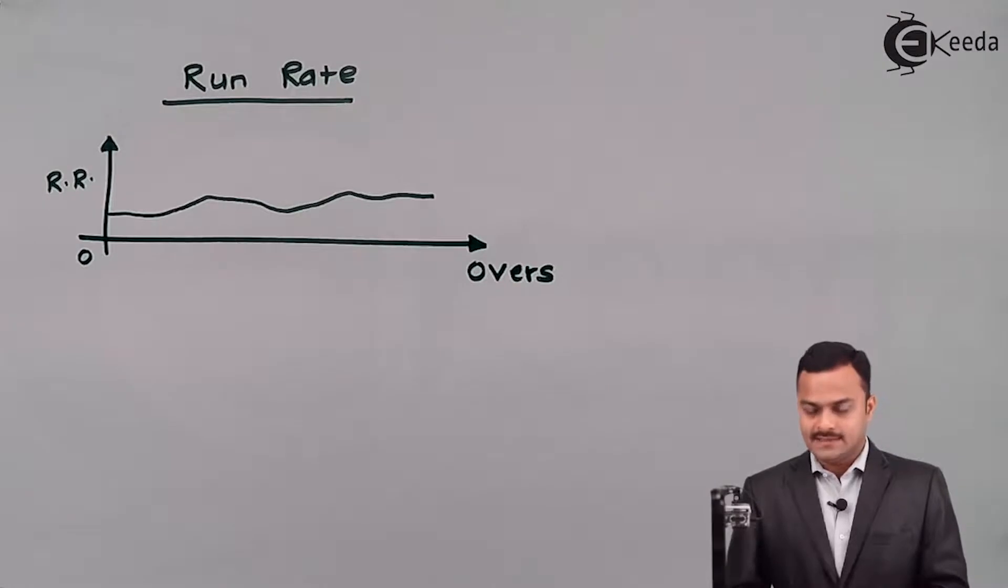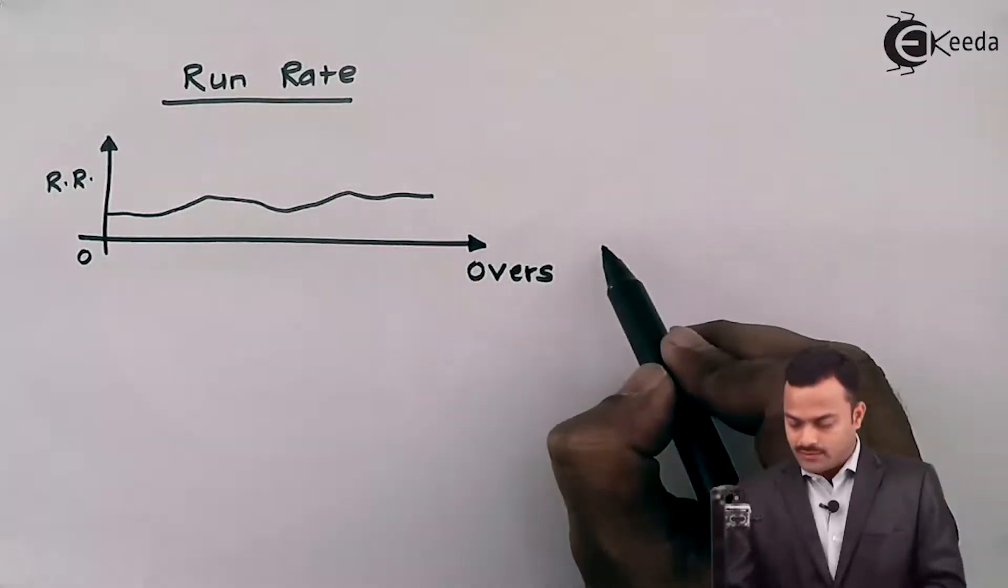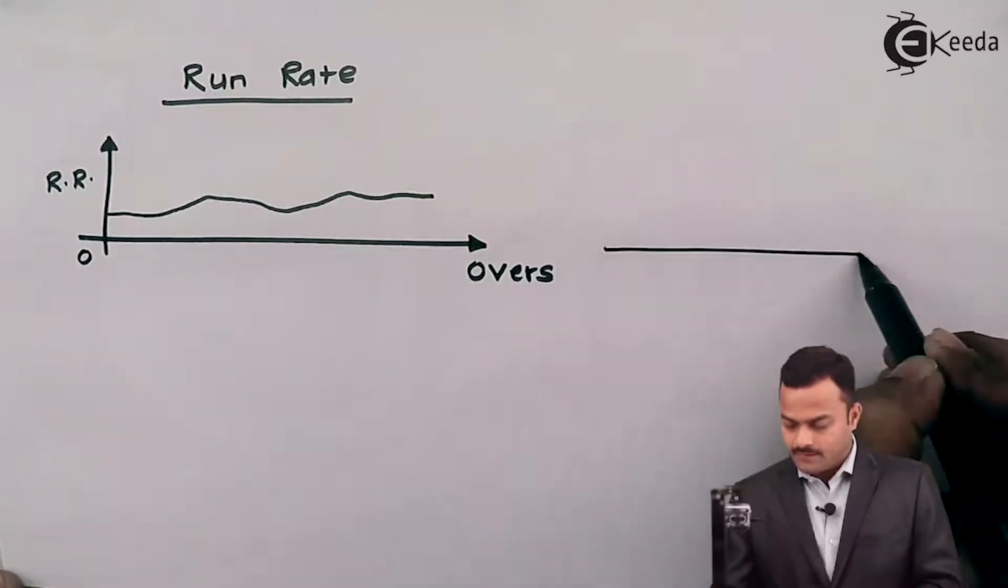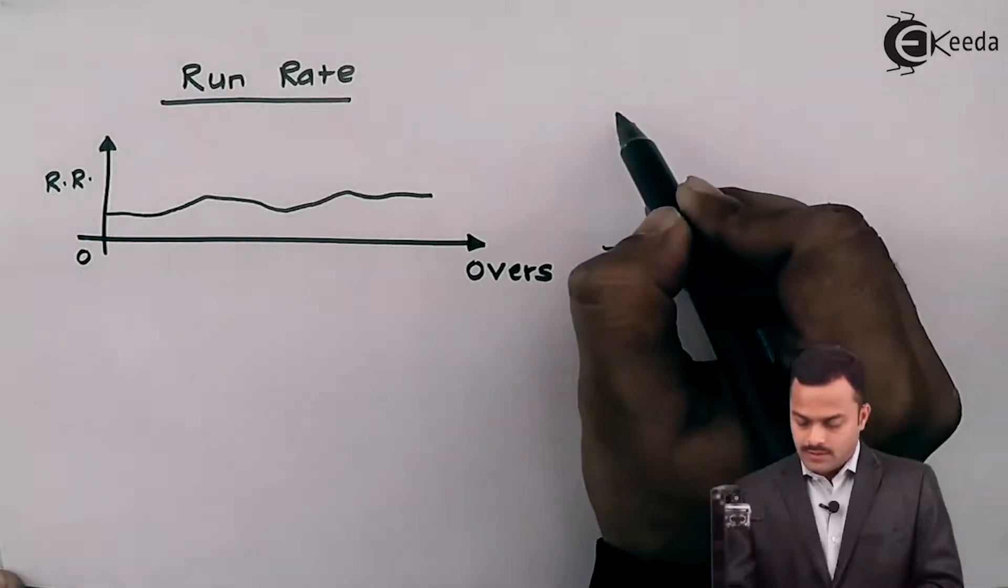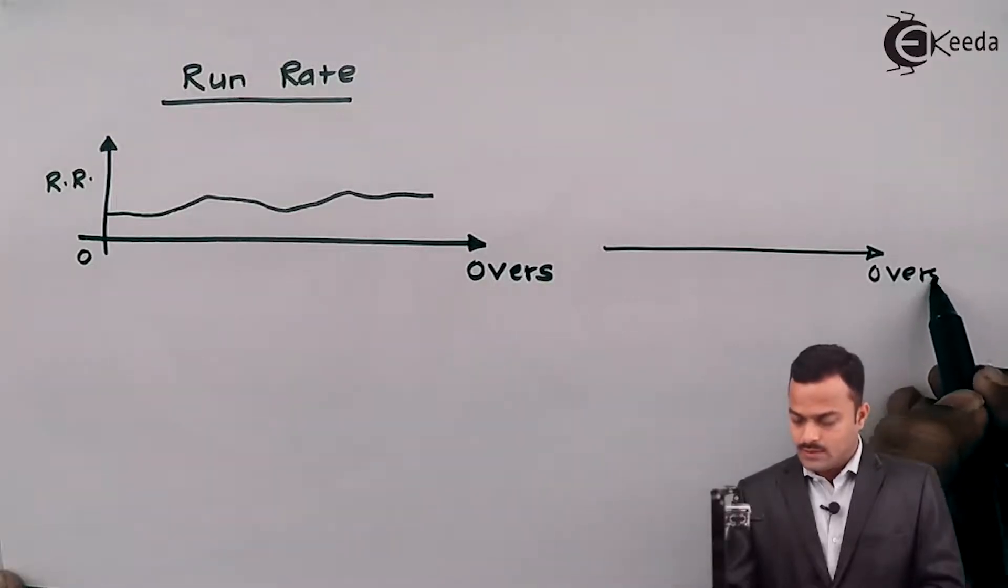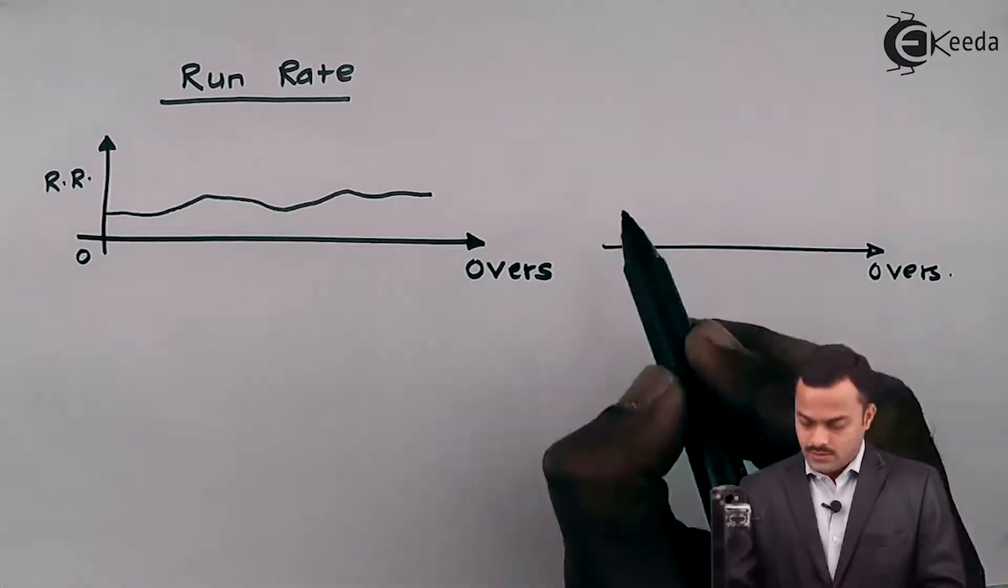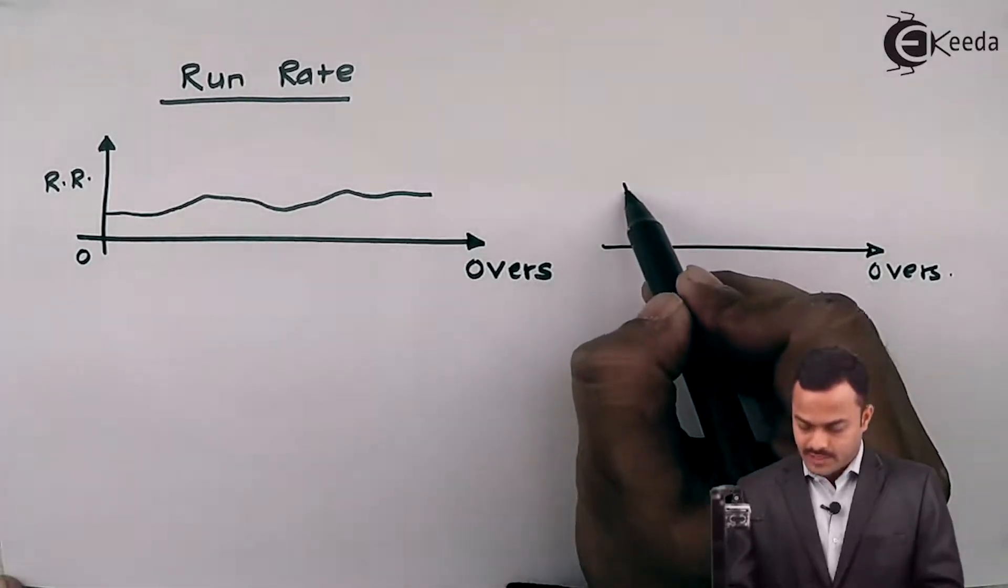So that can also be considered as a signal. Similar to this I can have one more graph that we can see, and that graph is nothing but overs and how many runs are scored in a particular over.